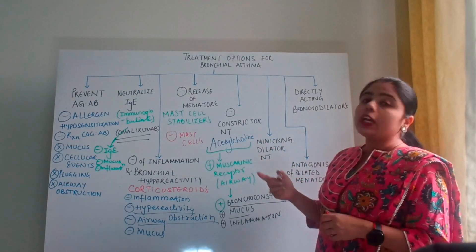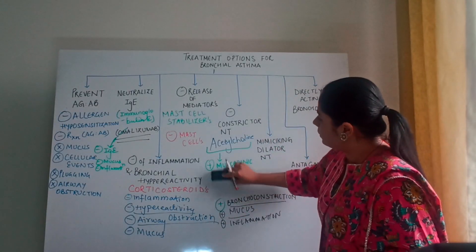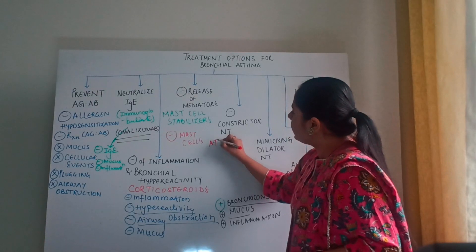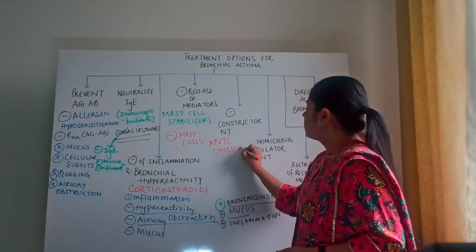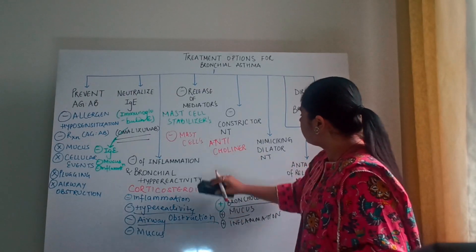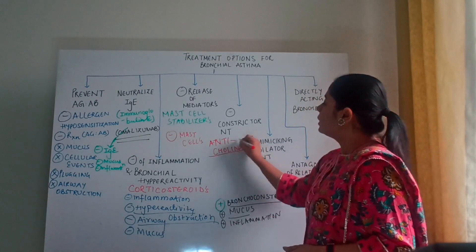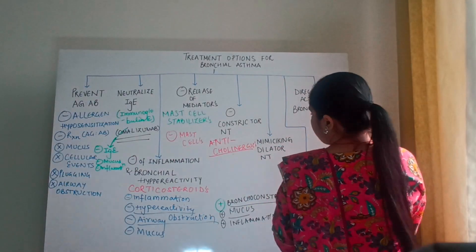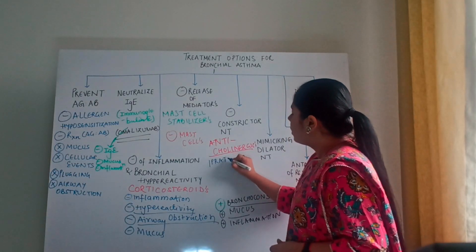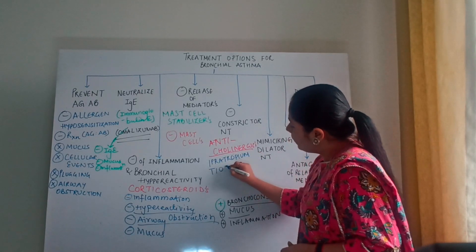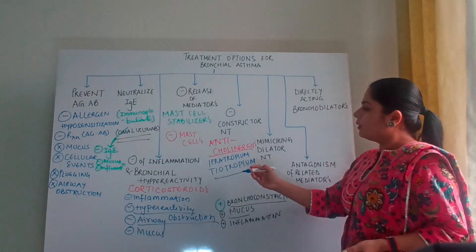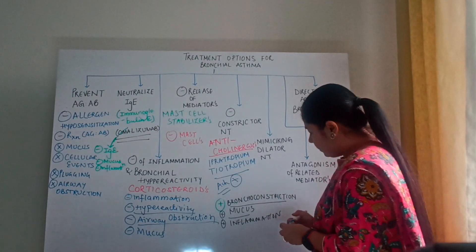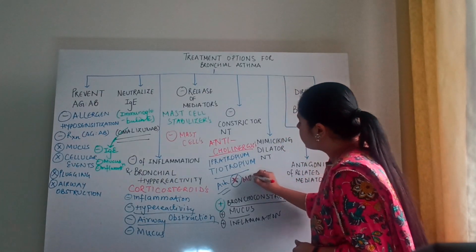For the constrictor neurotransmitter pathway, the drug of choice is anticholinergic drugs. Anticholinergic drugs like ipratropium are given here. These drugs will obviously inhibit the release of acetylcholine.